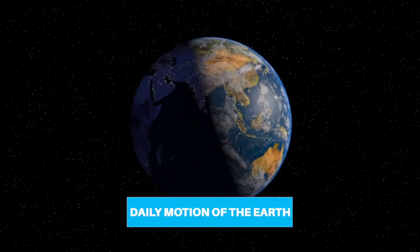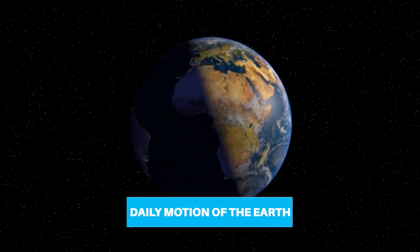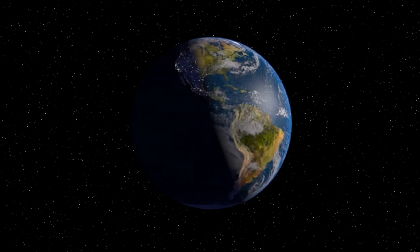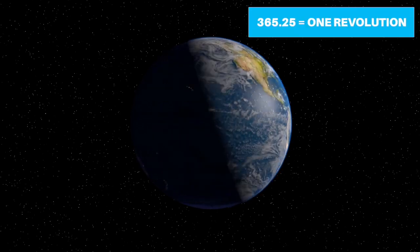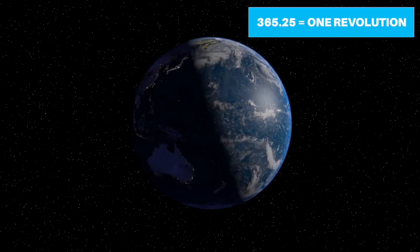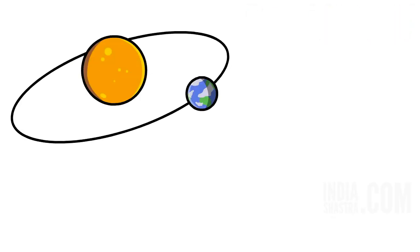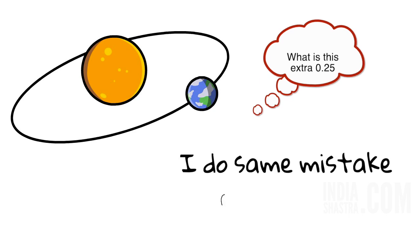The time period of rotation of the Earth around itself is known as the Earth Day. This is daily motion of the Earth. While spinning, Earth takes 365.25 days to revolve around the Sun in its orbit. It is called revolution.